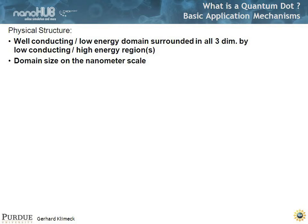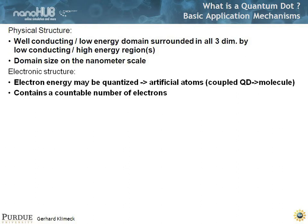In another way, you can say, well, I'm going to define a quantum dot by basic application mechanisms. So I have a well-conducting or low-energy domain surrounded in all three dimensions by low-conducting, high-energy regions. And the domain size must be of the size of nanometers. In the electronic structure sense, it should be that the energy is quantized, and that you get artificial atoms or artificial molecule-like states, and you have a countable number of extra electrons that you want to deal with.